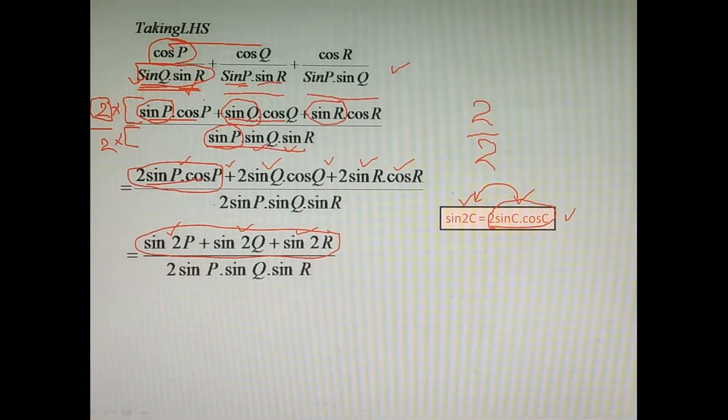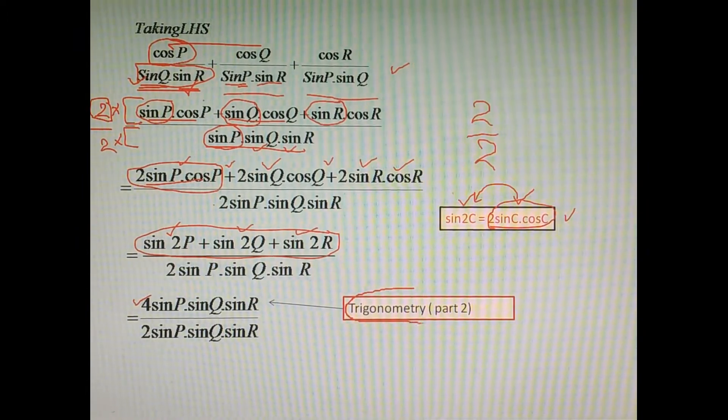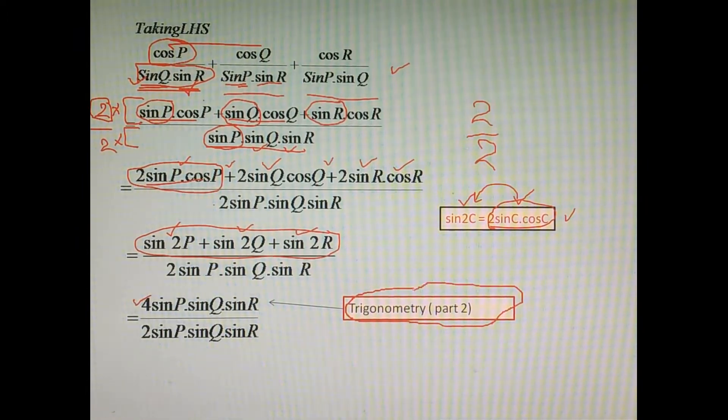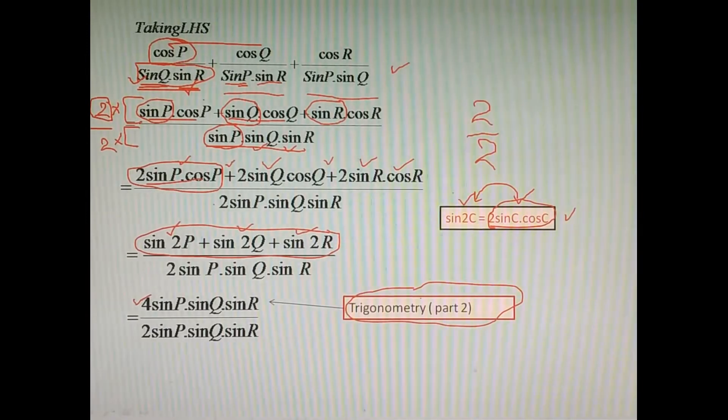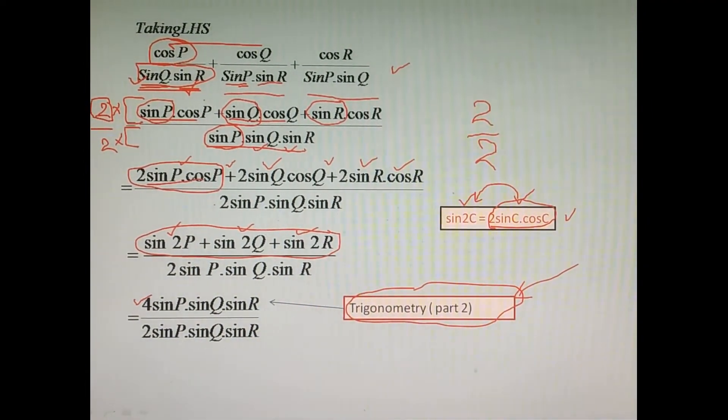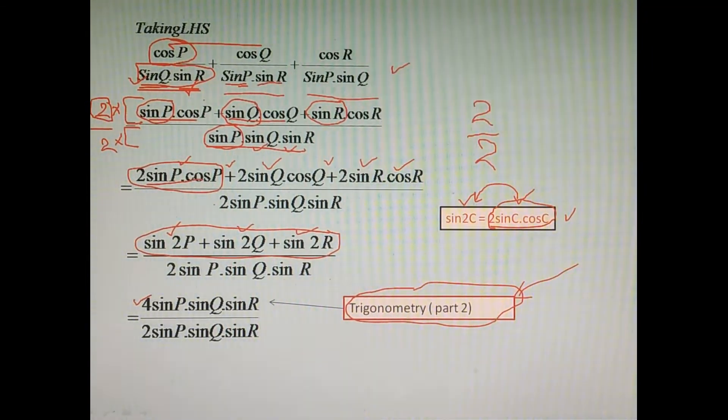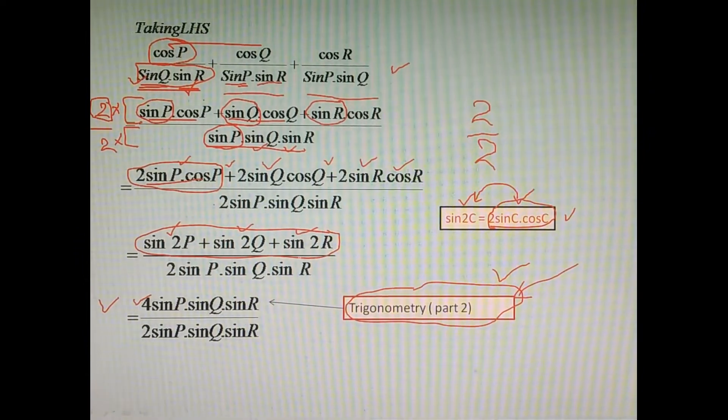Now after this step, sin 2P plus sin 2Q plus sin 2R can be directly written as 4 sin P into sin Q into sin R. So how this can be done? For that you have to go through the video that I have uploaded here as the second video from trigonometry section. It is a very long process. This is not compulsory to follow during your examination, as it will make your solution very long. That's why you can directly write this one. But for your understanding, please go through the second video of trigonometry here.